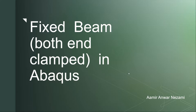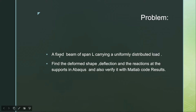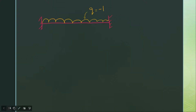In this video we are going to study the fixed beam in Abaqus — fixed beam with both ends clamped. The problem is a fixed beam of span length L, that may be 1000 mm, carrying a uniformly distributed load of magnitude minus one. We need to find the deformed shape, deflection, and the reactions at the supports in Abaqus and also verify it with MATLAB code results. Both ends are fixed and a distributed load is acting.